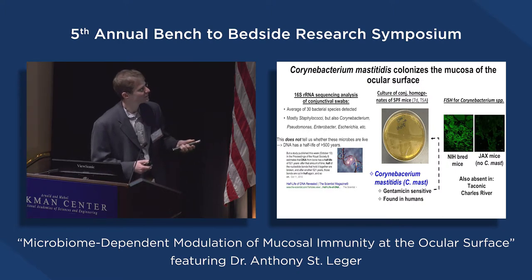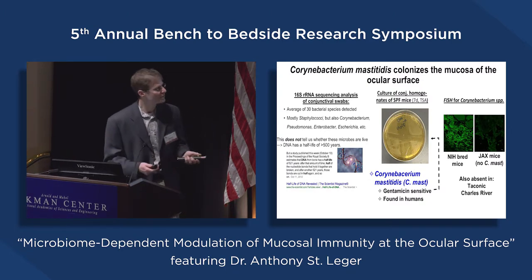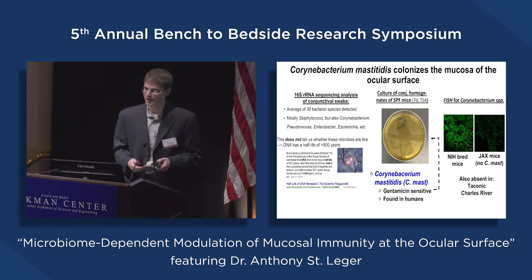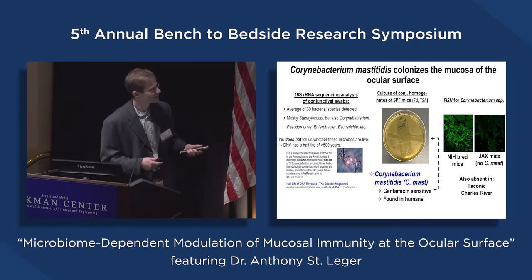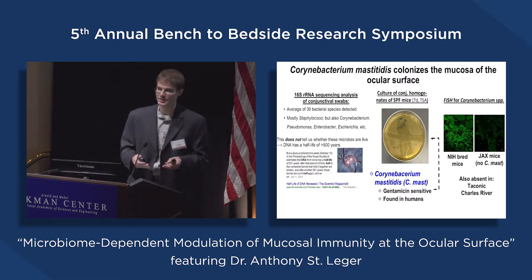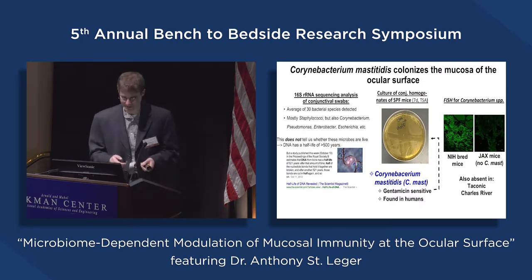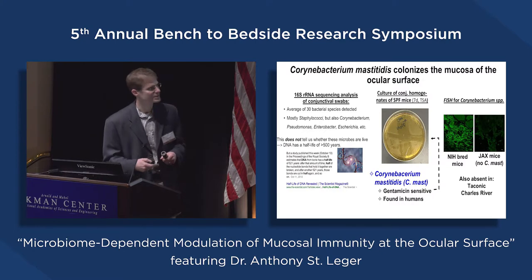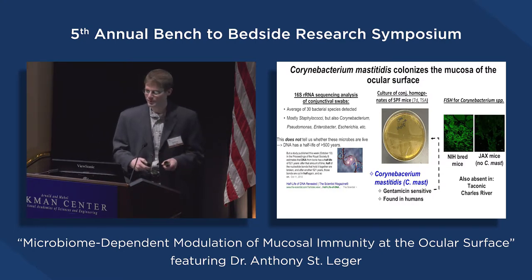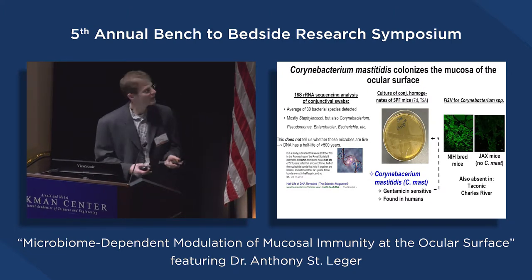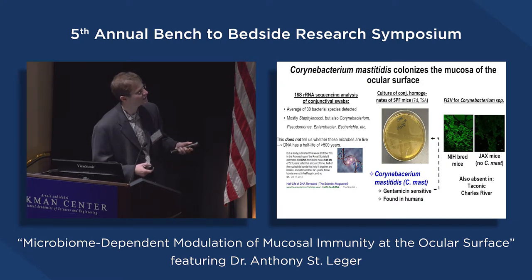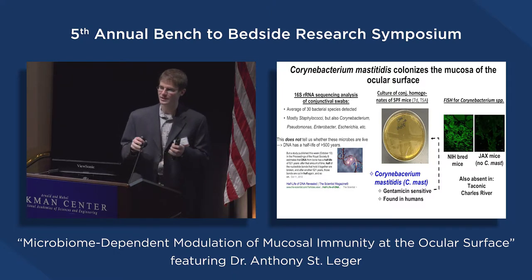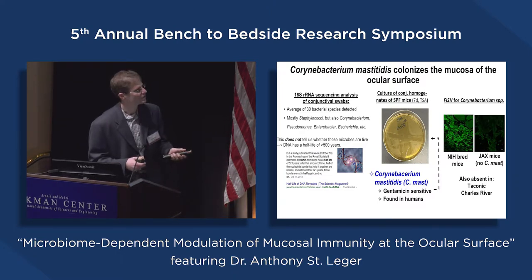What we found was Corynebacterium mastiditis actually grew out of the conjunctival tissue. When we sequenced this bug, interestingly, the isolate was very similar to one found in the conjunctiva of a nine-year-old boy published many years ago. Further, this bug is susceptible to gentamicin, a common antibiotic prescribed for ocular surface disease. We then performed fluorescence in situ hybridization to look for the Corynebacterium genus, and found it was very abundant in the conjunctival tissue — we could see filaments forming in the tissue, suggesting the bug is actually embedded in the tissue rather than just landing there.